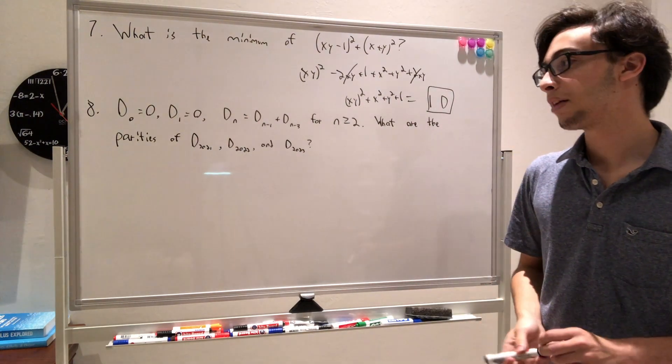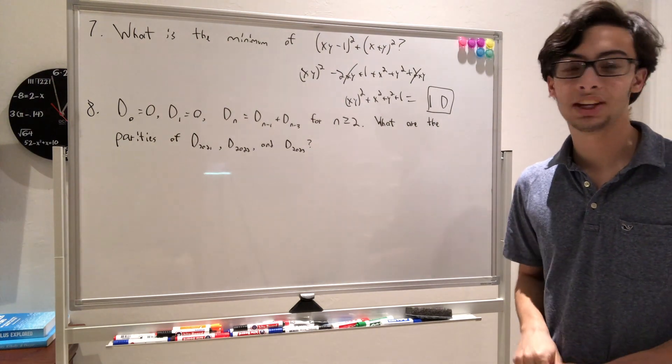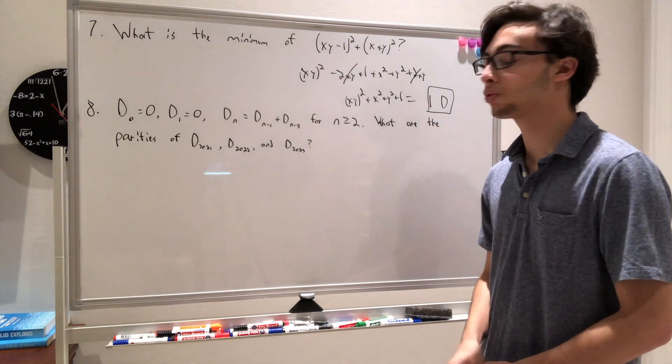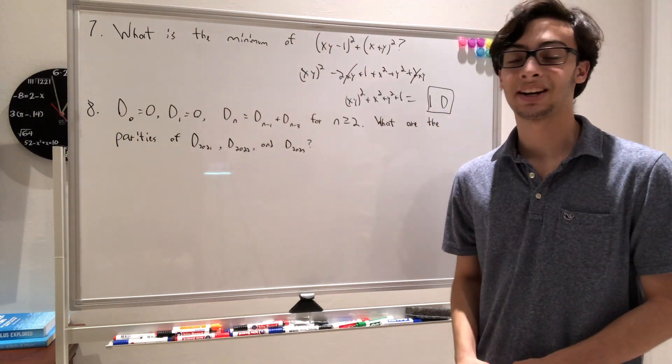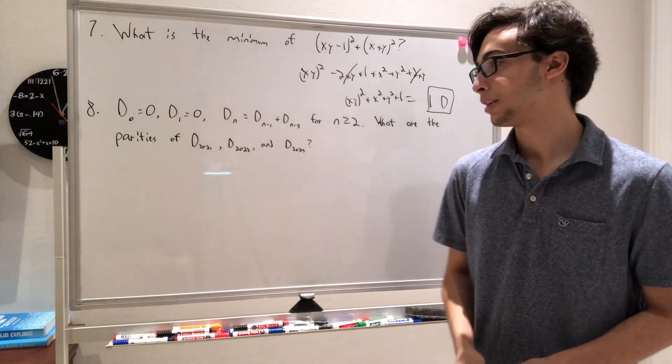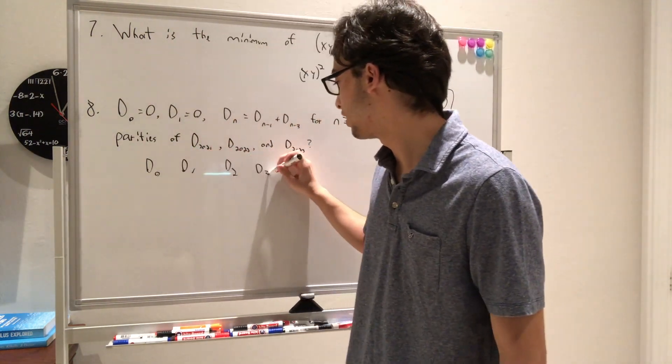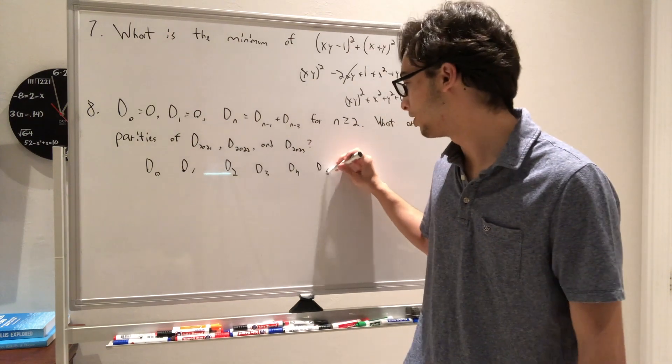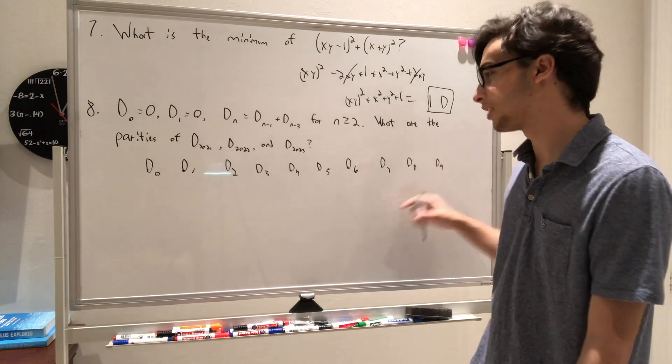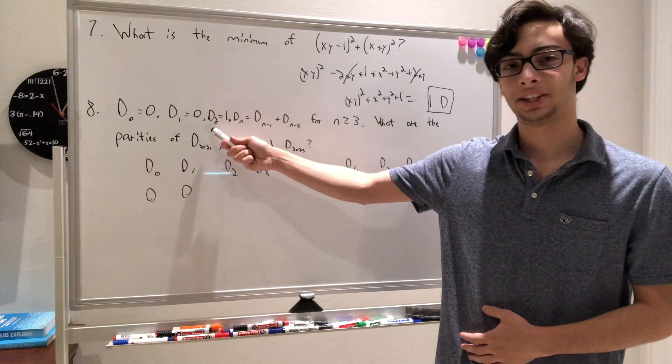Moving on to question 8, we have D0 equals 0, D1 equals 0, and then Dn is equal to D of n minus 1 plus D of n minus 3 for all the rest. And it asks us what are the parities of D 2021, 2022, and 2023, where parities means whether they're odd or even. Now, to do this problem, because we want to find such large numbers, we should probably make a chart and see if we can find a pattern. So I'm going to start writing out D0, D1, D2, D3, D4, D5, D6, D7, D8, D9. So now D0 we know is 0, D1 we know is 0. I forgot to mention that we also know that D2 has to equal 1.